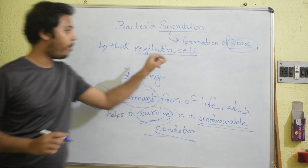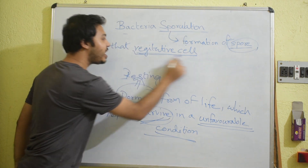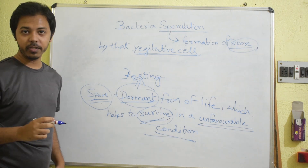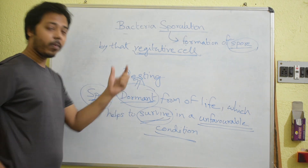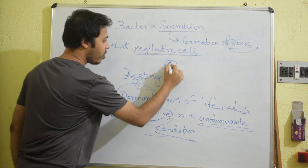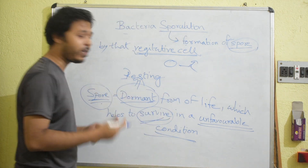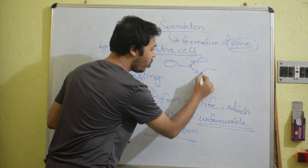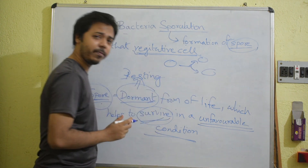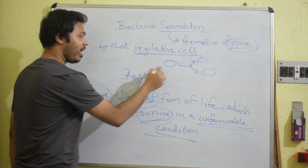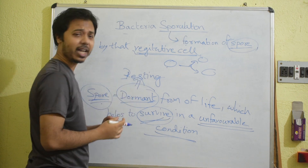Sporulation is the formation of a spore by that vegetative cell. In normal condition, a normal cell after a certain period of time will divide from one cell to another cell — that is called normal cell division. Normally, a cell is under the vegetative cell condition.